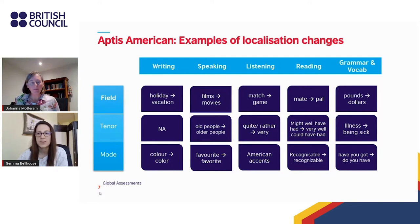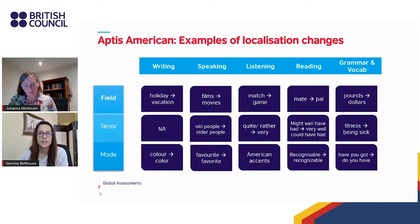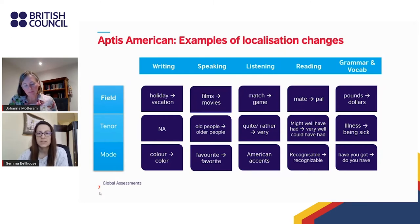Let's take a close look at the table on the slide. The APTIS skills or components are in the top light blue row across the top, and at the left in the light blue column you can see the categories: field, tenor, and mode. All the amendments to the tests were separated into these three categories. For the initial review and to analyse the changes, we used the theory of context of situation — and these three categories came from systemic functional linguistics.